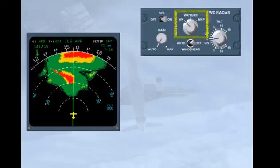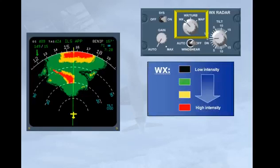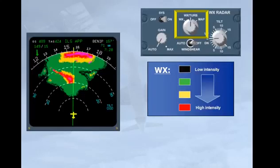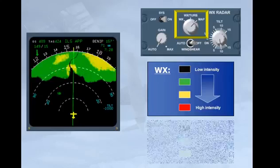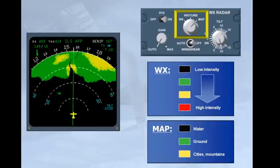The three position mode selector: Weather shows the intensity of precipitation. Weather Turb shows the turbulence areas in magenta. Map — the radar operates in ground mapping mode.